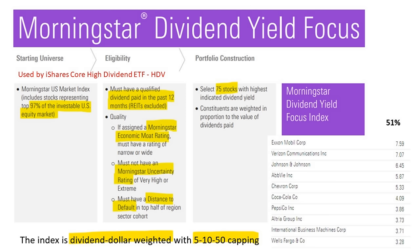The Morningstar index is a different animal. It starts with the top 97% of the investable U.S. equity market — presumably including small caps. You must have a qualified dividend paid in the past 12 months, and REITs are excluded. Then Morningstar applies proprietary classifications: Morningstar Economic Moat, Morningstar Uncertainty Rating, and Distance to Default. After applying all that, they select 75 stocks using dividend dollar weighting, where higher dividends get a larger weighting. They use a 5/10/50 capping — meaning the top 10 constituents can't account for more than 50% of the total portfolio. Currently at 51%, so at rebalance they'd bring those down.